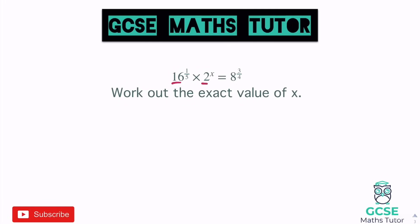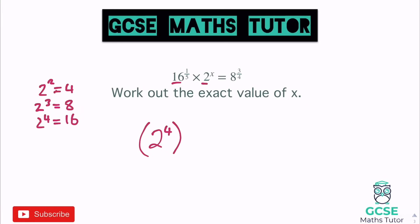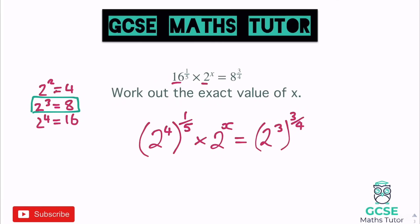Let's work that out: 2 squared is 4, 2 cubed is 8, 2 to the power of 4 is 16. So that 16 can be written as 2 to the power of 4, and since it's all to the power of a fifth, we put it in brackets: (2 to the power of 4) to the power of one fifth. On the right, 8 is also a power of 2 — it's 2 cubed — so we write 8 as 2 cubed to the power of three-quarters.